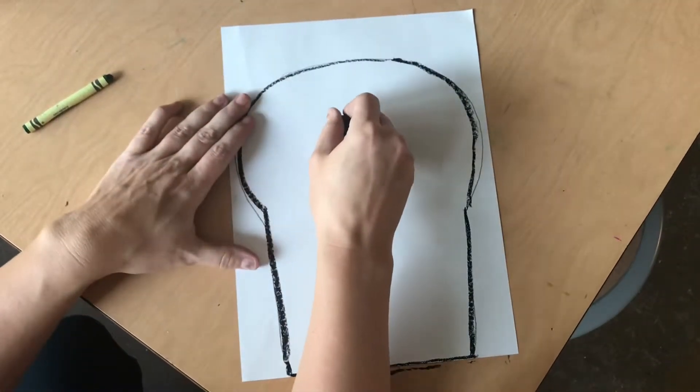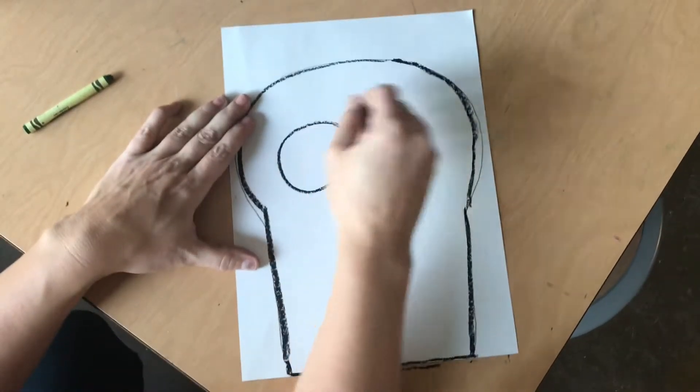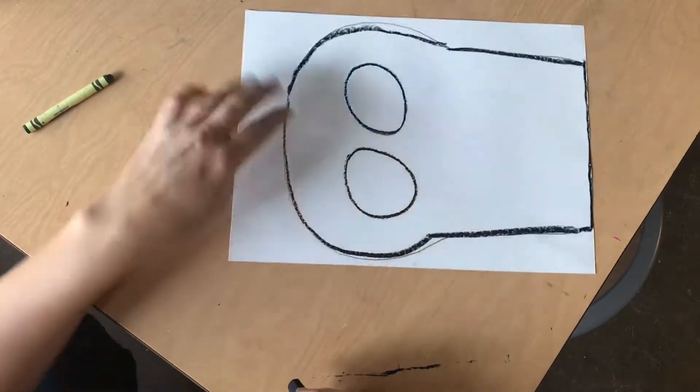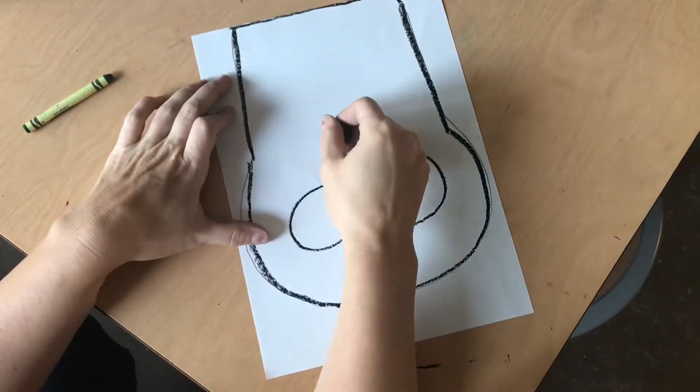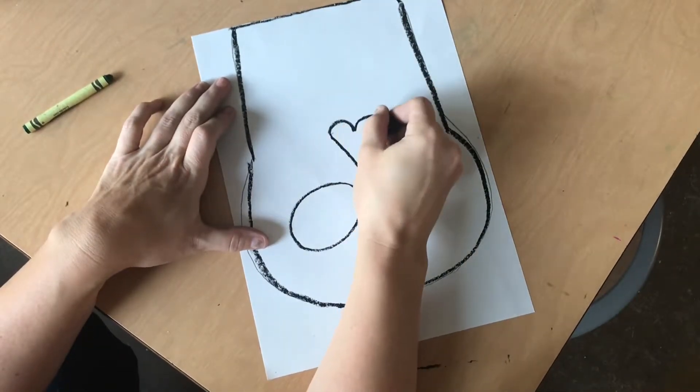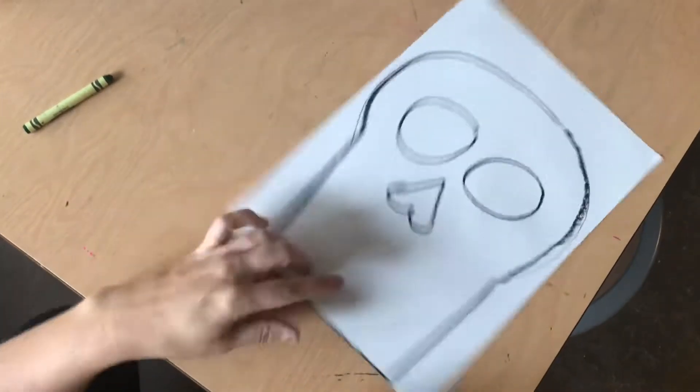So the shapes you use to make a skull are circle, circle, and then you turn it upside down and make a heart. So make a V and then make two bumps on top. Circle, circle, heart.